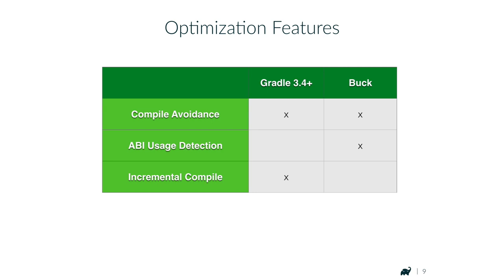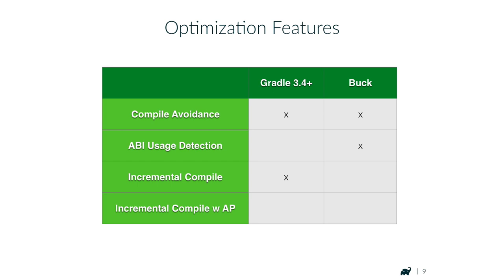ABI usage detection would be a nice intermediate improvement until we've figured out how to implement incremental compile for modules that use annotation processors. That is the disappointing news: incremental compile is still disabled in modules that use annotation processors, which is the case for many Android modules. We're working on a solution, but it's not trivial to do it the way we think it should be done. We cannot provide a timeline, but it's high on our list of priorities.